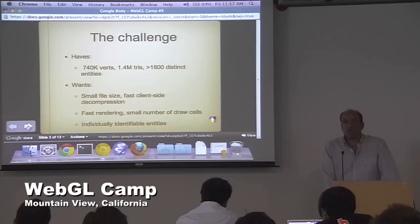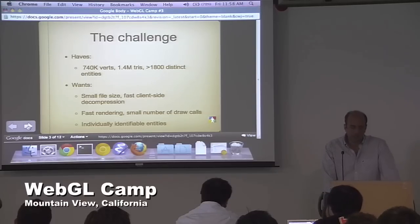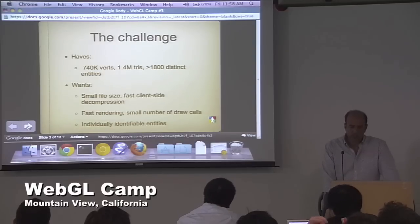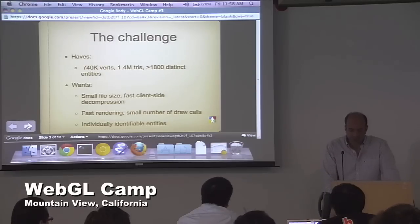The underlying technical challenge for this project is that we have an extremely complicated mesh. The model is licensed from a company called Zygote and it has close to a million and a half triangles. It also has a lot of detail because every single entity in the body is a separate mesh — so we have about 1,800 distinct entities.